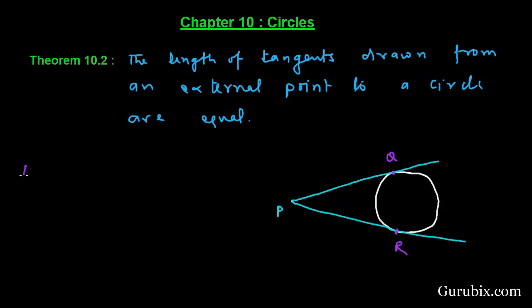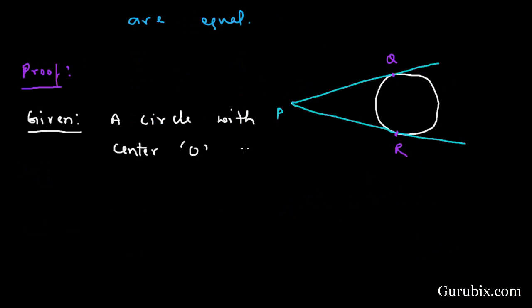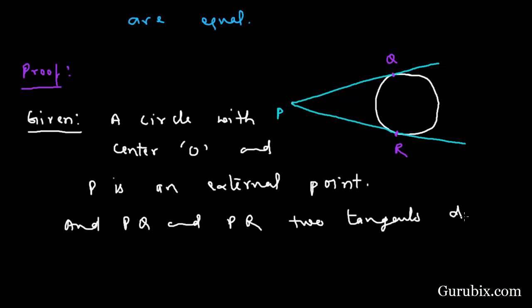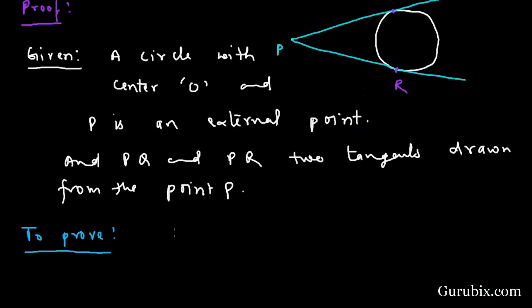So we shall write the proof. First we shall collect what is given to us. Given: A circle with center O, and P is an external point. PQ and PR are two tangents drawn from the point P. To prove: PQ is equal to PR.